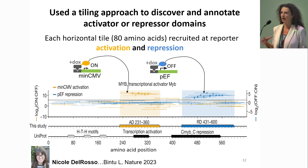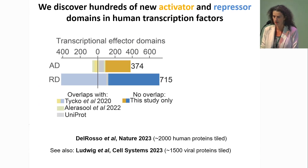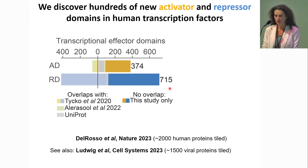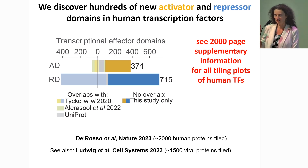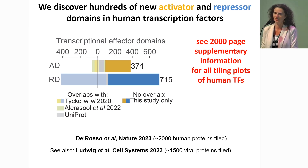We did this exercise in one pot for 140,000 sequences tiled across 2,000 proteins — 1,600 transcription factors and 400 chromatin regulators. What we found was a few hundred activation domains and over a thousand repressive domains, of which 700 or so were new, and very few were already annotated in UniProt. Most of the known ones were analyzed in a previous 2020 paper where we developed the technique. These repressive domains are mostly KRAB domains. There is a 2,000-page supplementary information — actually a supplementary figure — so you can look up your favorite transcription factor.